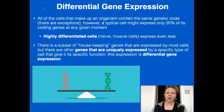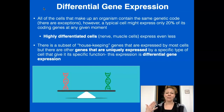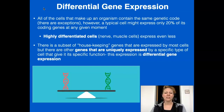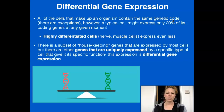All the cells in our body contain the same genetic code. A brain cell is going to have the same genome as a skin cell — there are exceptions, but let's not focus on those. A cell will express about, on average, 20% of its coding genes at a given moment. All of the DNA in our cells, a majority of it is non-coding.